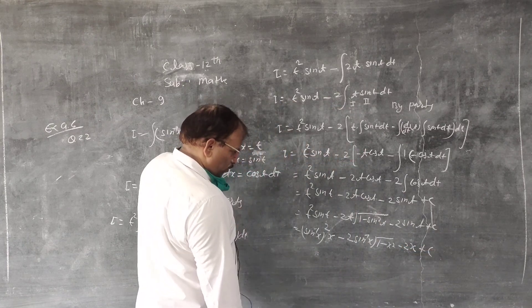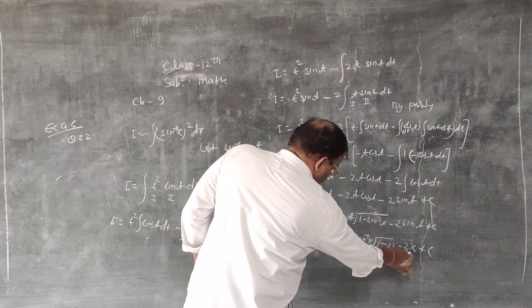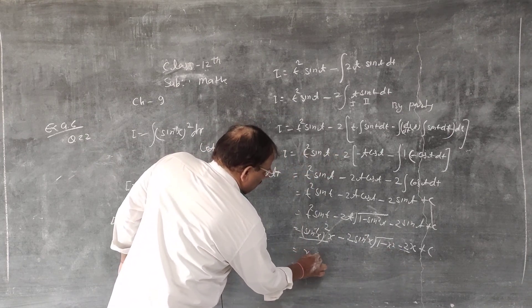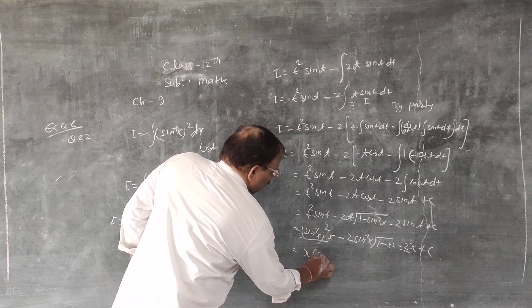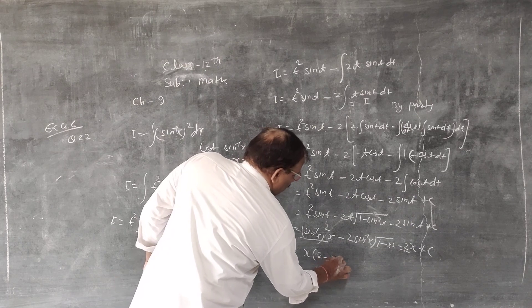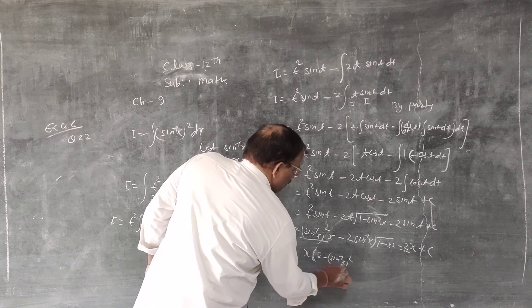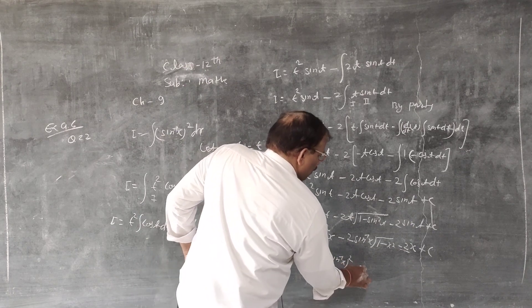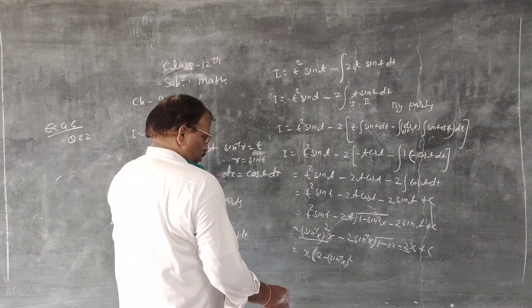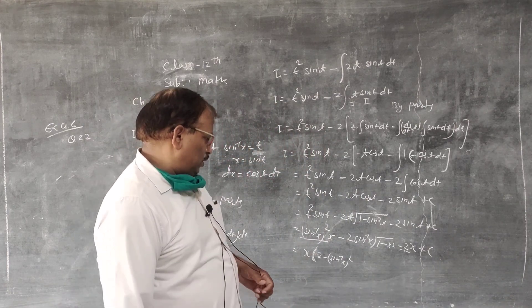Taking x as common from appropriate terms, the final answer can be written with common factor extracted. Final answer: x(sin⁻¹x)² − 2 sin⁻¹x · √(1 − x²) − 2x + c.